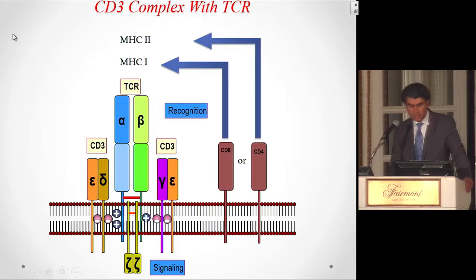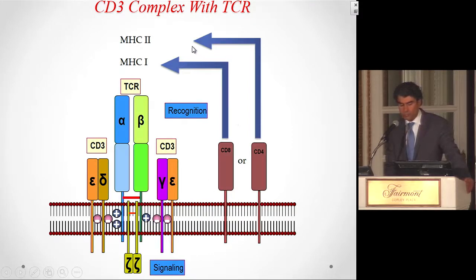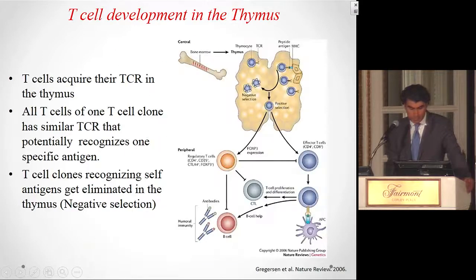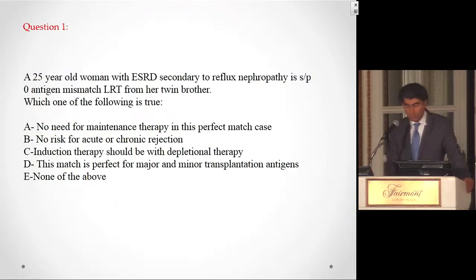The T cell receptor has a constant region and a variable region. Every clone has one type of variable region to recognize a specific antigen, and we have billions of different T cell receptors. CD3-positive cells are the T cells — CD3 is a molecule that stabilizes the T cell receptor. The CD3-positive T cell can be either CD8, which helps the cell bind to MHC class 1, or CD4, which helps it bind to MHC class 2.